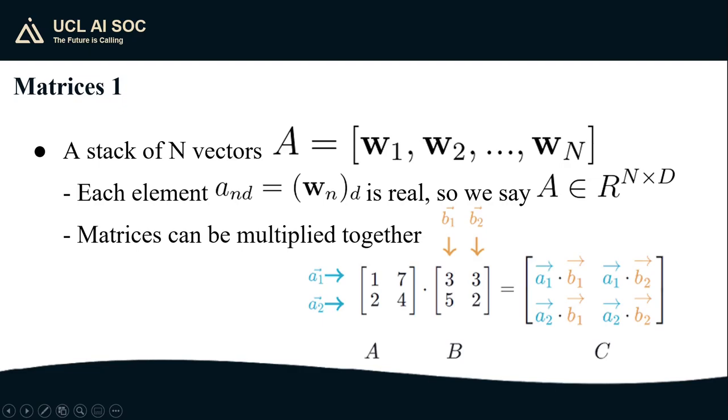Next, we introduce matrices. A matrix is just several vectors put together. As such, a matrix is going to have two dimensions. The first dimension is going to be the number of vectors in the matrix and the second dimension is going to be the dimension of the vectors in the matrix. Matrices can also be multiplied together and matrix multiplication is just application of the dot product over and over for each entry of the resulting matrix.